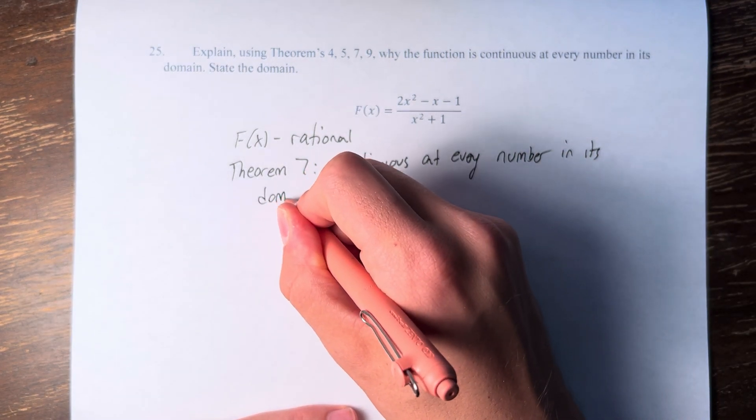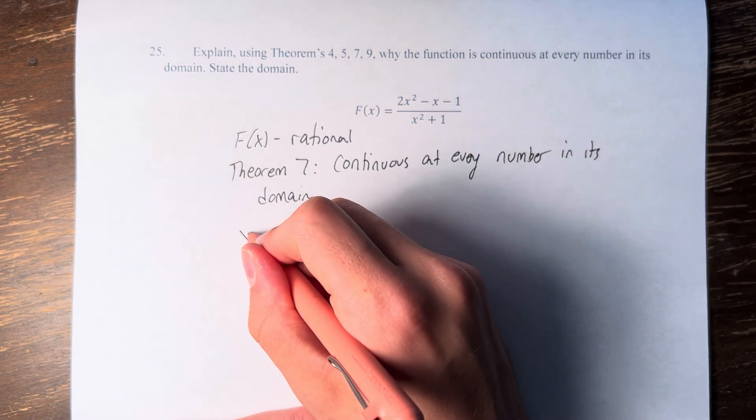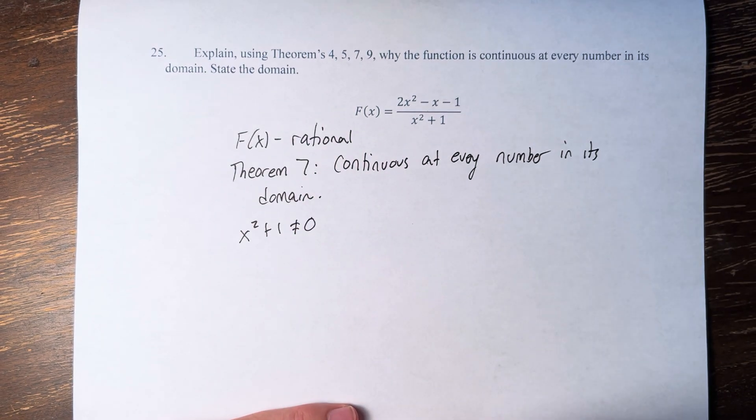What is that domain? Well, the domain restriction for a rational function is that the denominator, in this case x² plus 1, cannot be equal to 0.